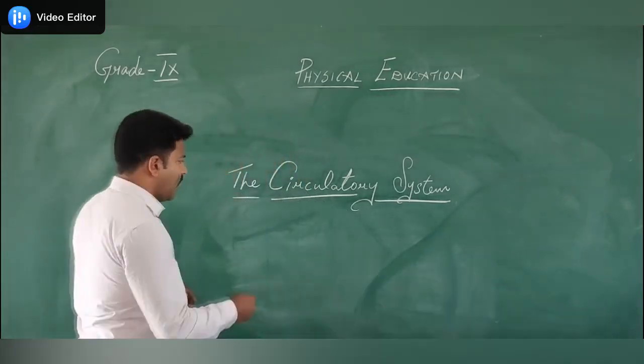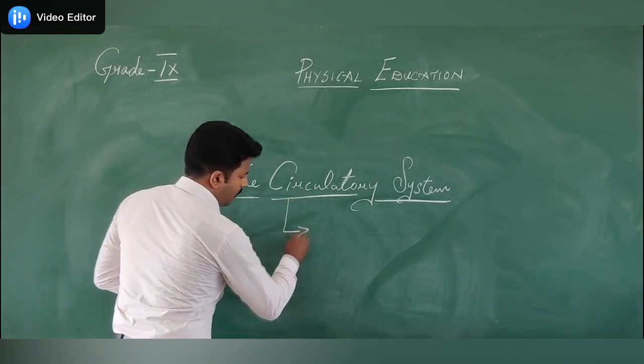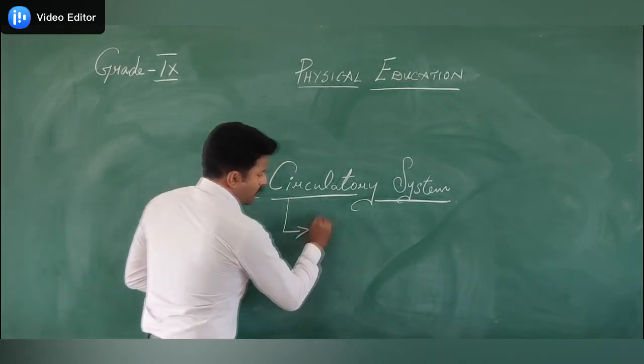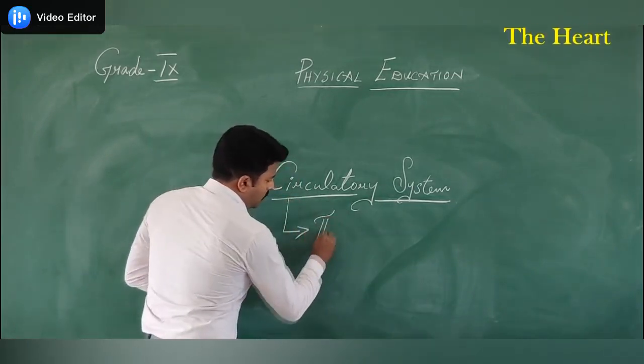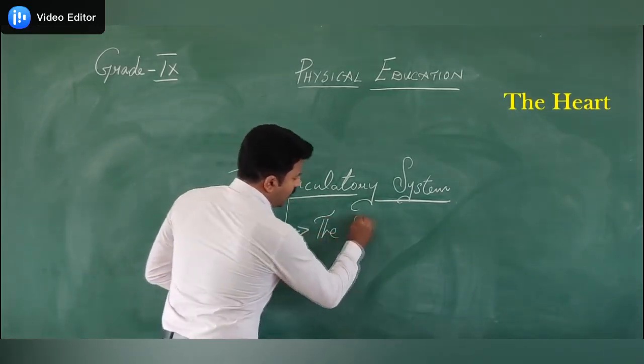In the circulatory system we are going to see three major parts. The three major parts are: the heart,